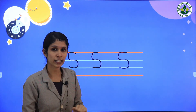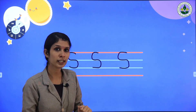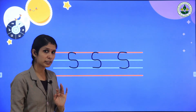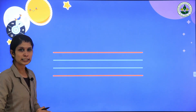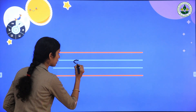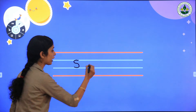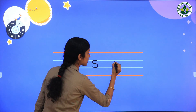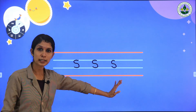The sound of letter S is S. What is the sound of letter S? S. Very good. Now let's write small letter S. We are going to trace small letter S. Small letter S starts from the first blue line to the second blue line. Which letter is this? Small letter S.